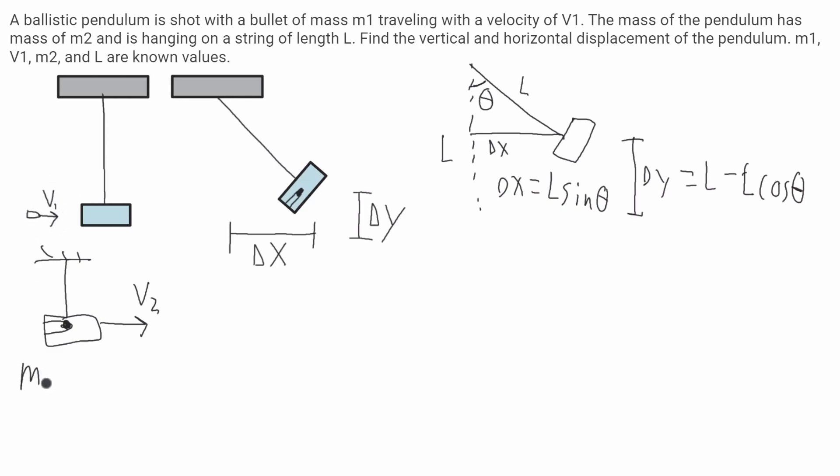It'll be the mass of the bullet which will be m1 times the velocity of the bullet which will be v1. This will be equal to the momentum of the bullet and the pendulum together, which will be m1 plus m2 times their new velocity v2.